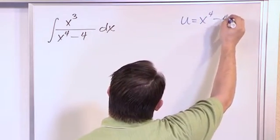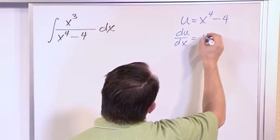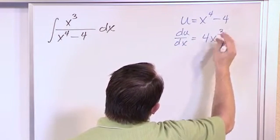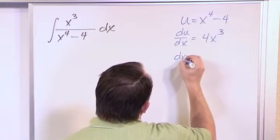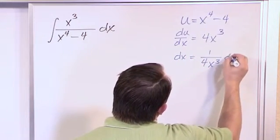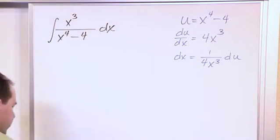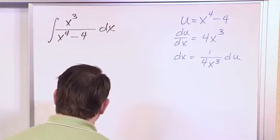du with respect to x is 4x cubed. So then dx is equal to 1 over 4x cubed du, like this. You know, I know it's painful, but you have to write all this stuff down so you don't get confused.